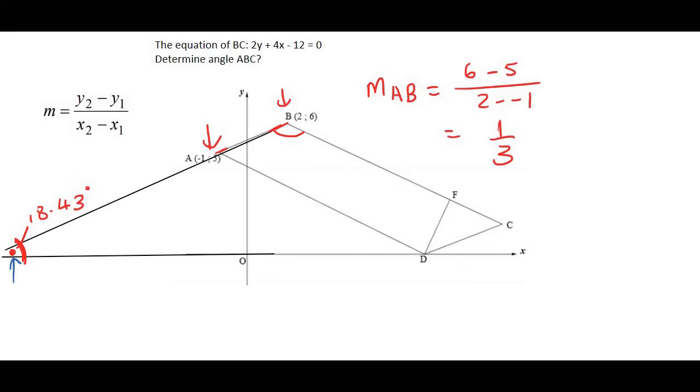Now what we do is we can extend this line over here. We can do the same concept. And I'm just going to extend the x-axis a little bit like that. And so now we can find this angle if we have the gradient. And we do have the gradient because they told us that the equation of BC is over here.